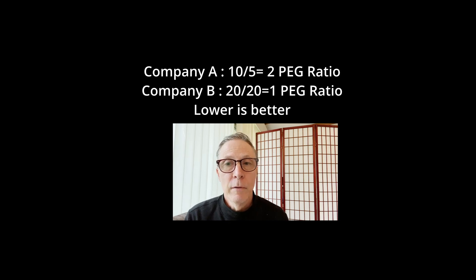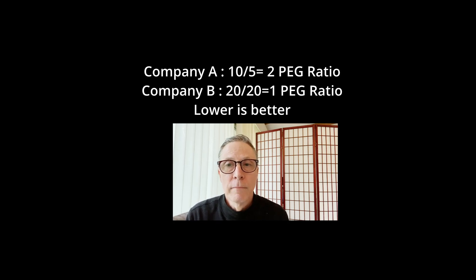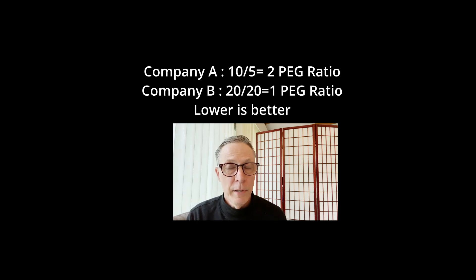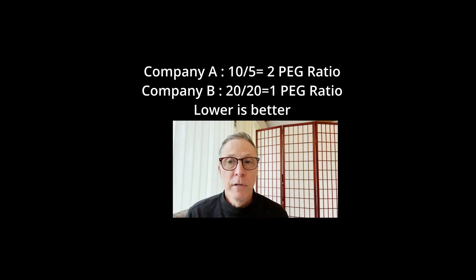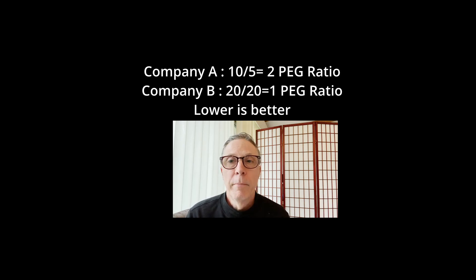If we calculate the PEG ratio for Company A, we assume it has an expected earnings growth rate of 5% per year. We take the P/E ratio of 10 and divide by the 5% earnings growth expectation, giving 10 divided by 5, which equals a PEG ratio of 2. Company B had a higher P/E ratio of 20, but has an expected growth rate of 20% per year — a very fast growing company. Taking 20 divided by 20, the PEG ratio would be 1.